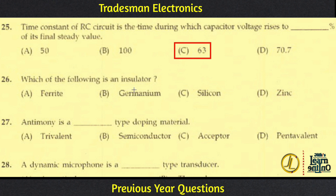The next question asks: which of the following is an Insulator? This option is not an Insulator. This option is not an Insulator. This option is an Insulator.